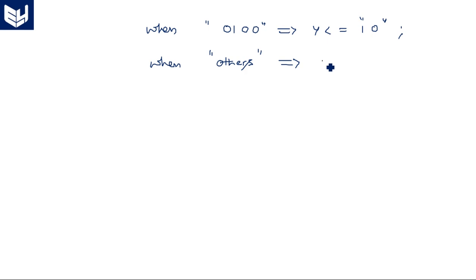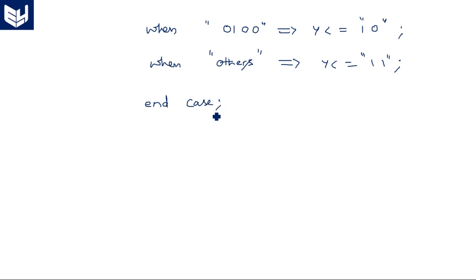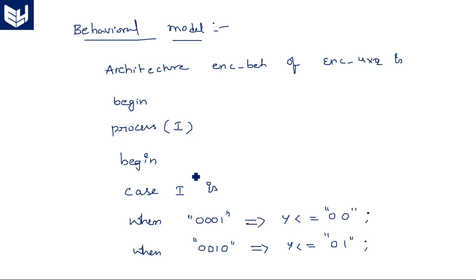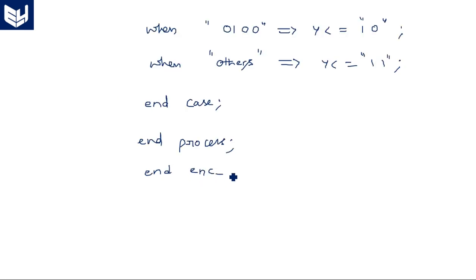As it is the last statement, you should write 'others'. When others, Y equals 11, because that is the only case left. End case, end process, end architecture. The name of the architecture is encoder_behavior.